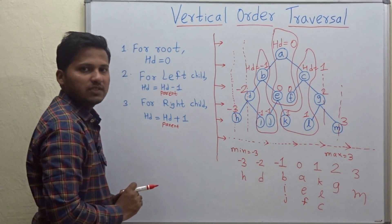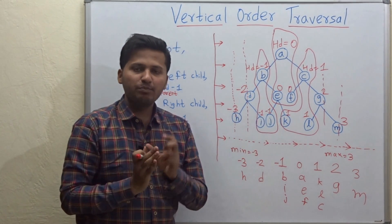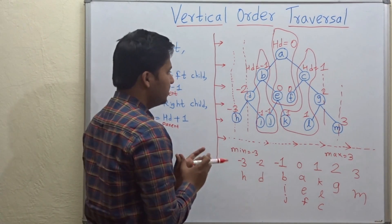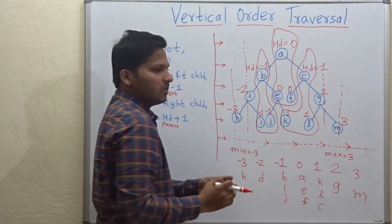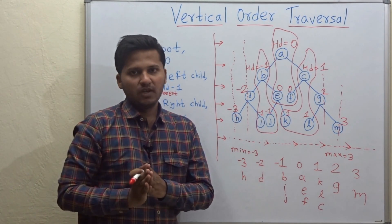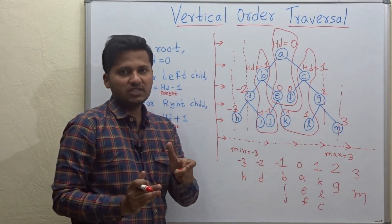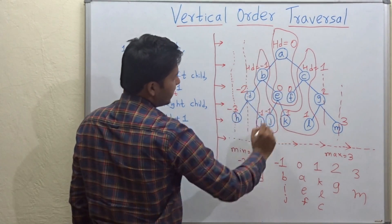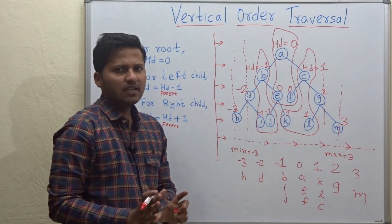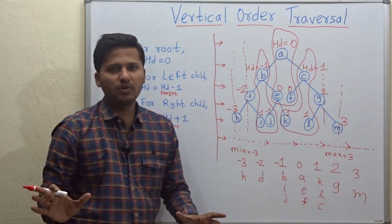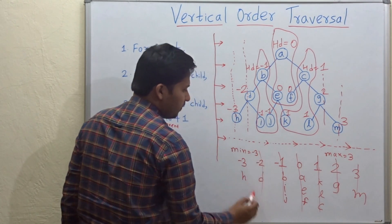Remember that when we draw a binary tree on paper, we generally cannot draw it so perfectly that all vertical lines come exactly straight. So marking these lines before calculating distances is prone to mistakes. Always assign distances first and then go for marking lines — and marking lines is not even mandatory. You can just take the nodes with the same distance together to get the vertical order traversal.